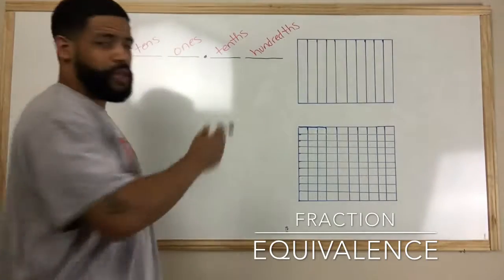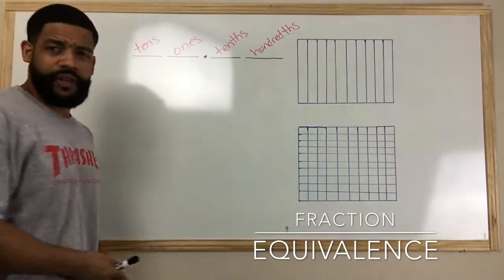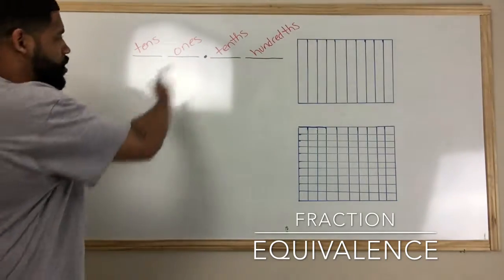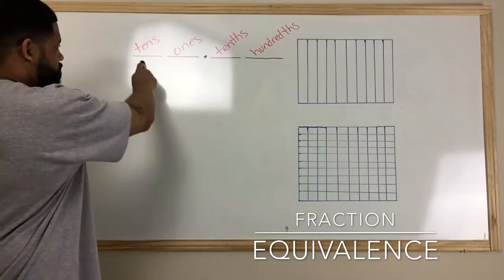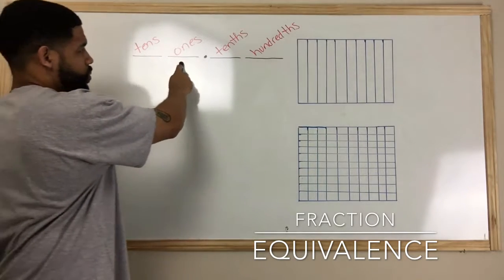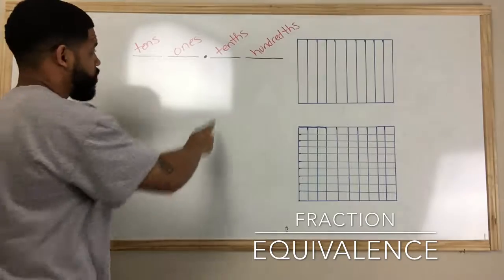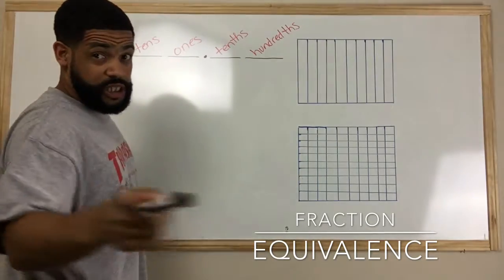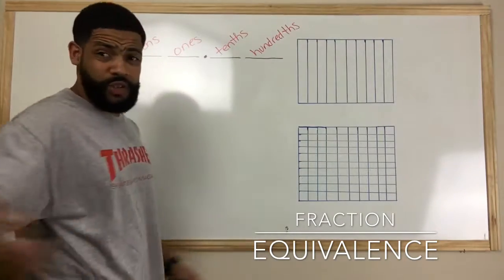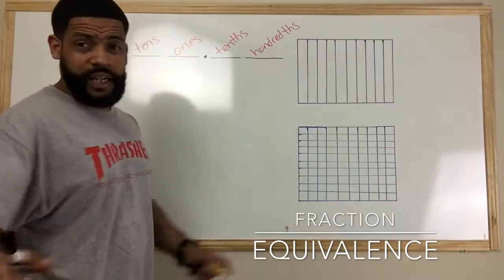Real quick, first thing I want to talk about is let's talk about some place value a little bit. So when we look at place value, we have our tens place, our ones place, then we have our decimal, then we have the tenths place with the TH, and then the hundredths place with the TH as well.